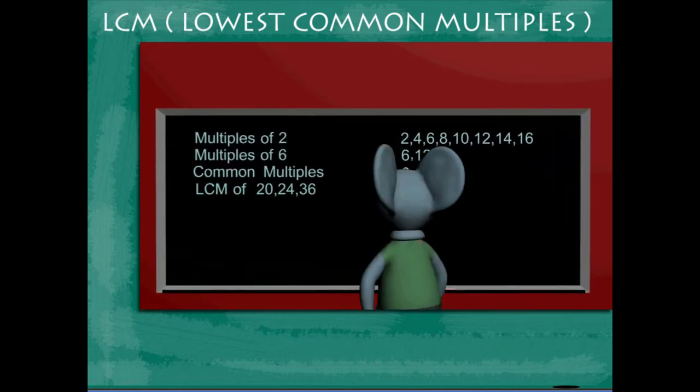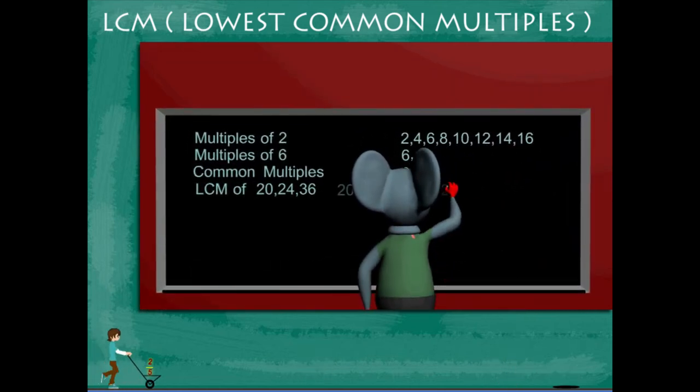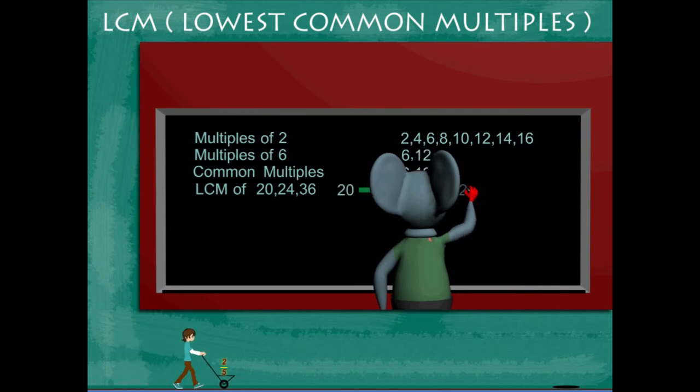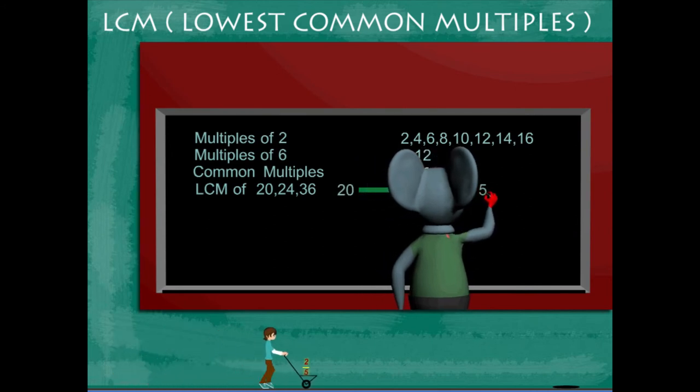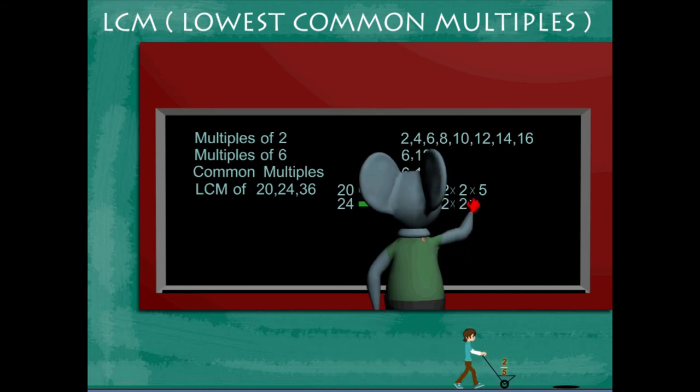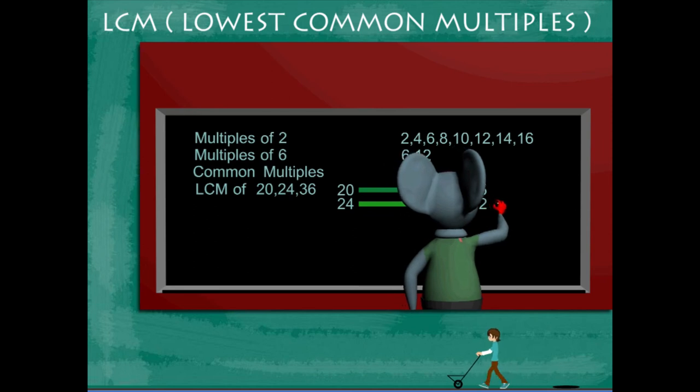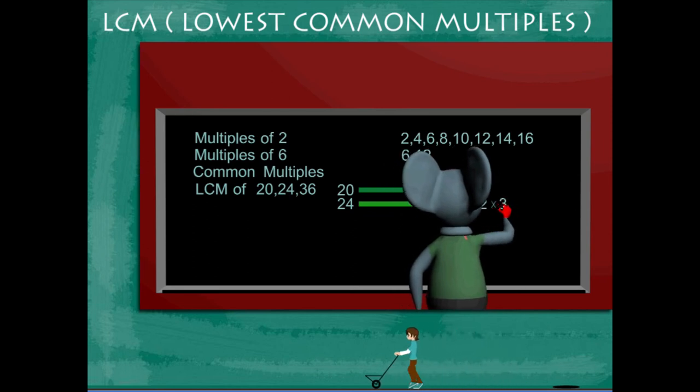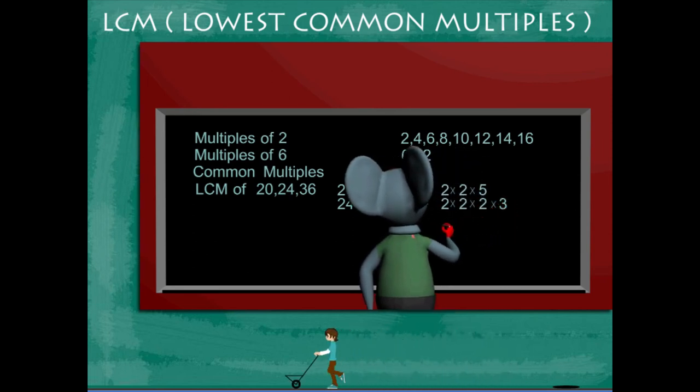He writes the factors of 20: 2 into 2 into 5, then the factors of 24: 2 into 2 into 2 into 3, and finally the factors of 36: 2 into 2 into 3 into 3.